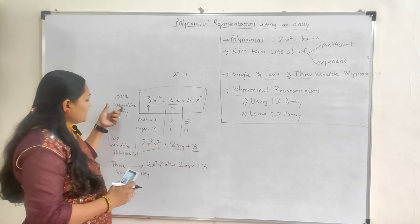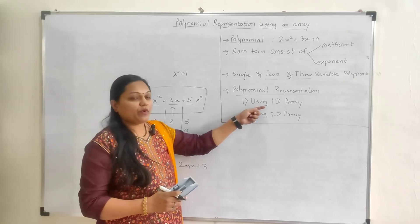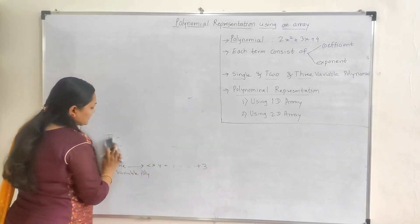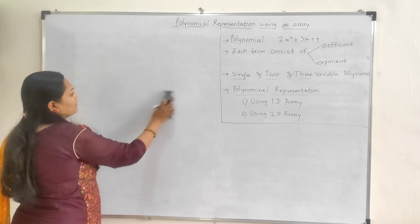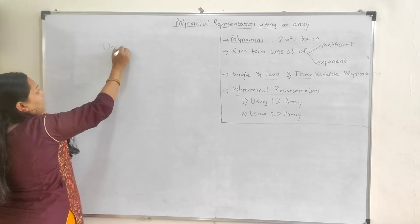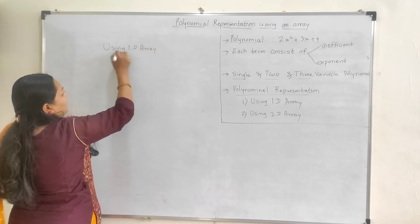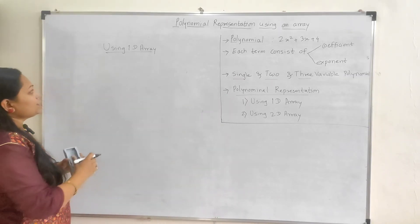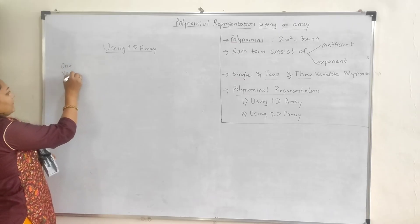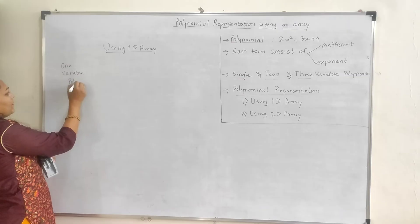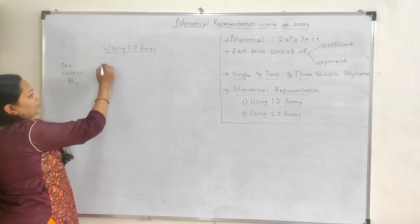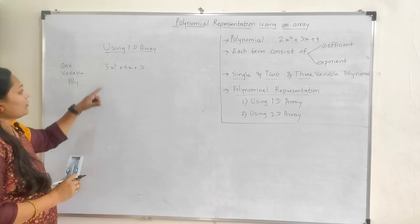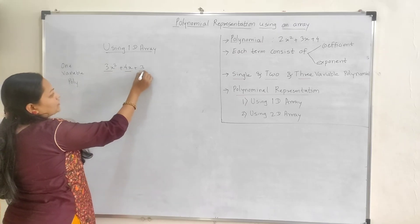Now we will see how we can represent this type of polynomial using a one-dimensional and two-dimensional array. First, let's see using a one-dimensional array how we can represent a polynomial. We will consider first a one variable polynomial. So in one variable polynomial, we will take one example: 3x raised to 2 plus 4x plus 3. So total how many terms are there? Three terms are there.